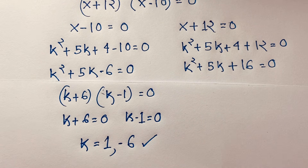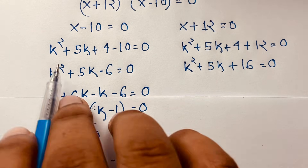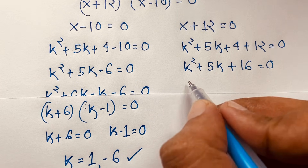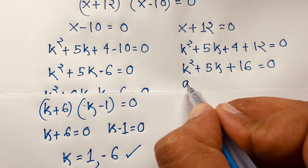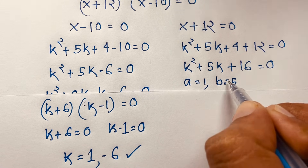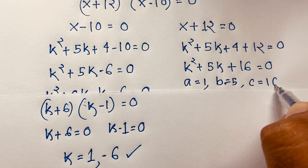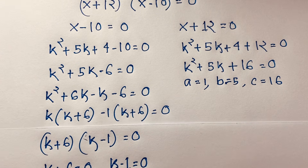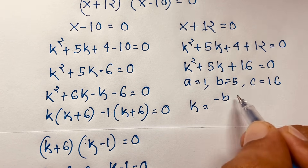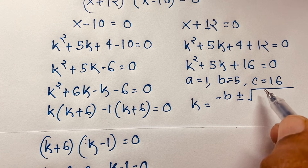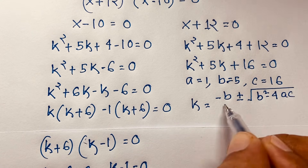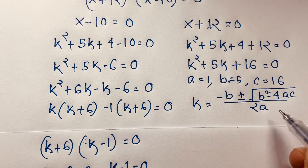Now for k² + 5k + 16 = 0, this doesn't factor nicely, so we apply the quadratic formula. Here a = 1, b = 5, and c = 16. The formula is k = (-b ± √(b² - 4ac)) / (2a).